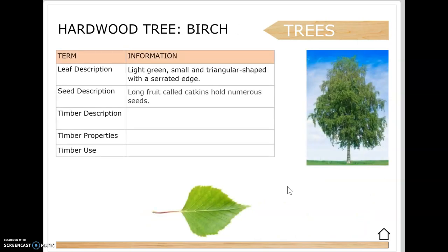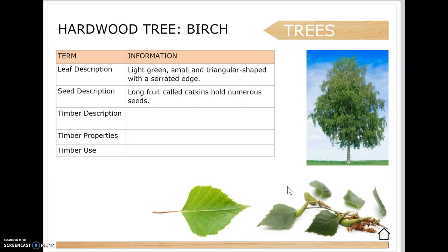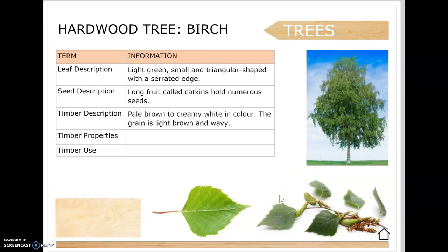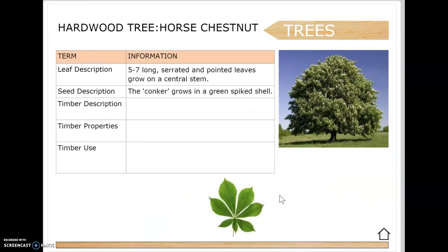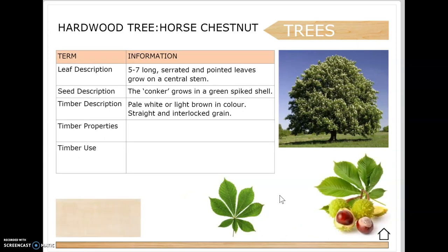Birch has a light green small triangular-shaped leaf with a serrated edge. The long fruit called catkins hold numerous seeds. Silver birch is known for its white paper-like bark, and regular birch has similar properties. The timber is brown, pale or creamy white in color with a light brown wavy grain. It's close-grained and easy to work with. Uses include plywood, pulp and crates.